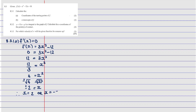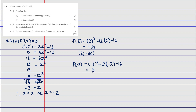These are only the x-coordinates of the turning points. We need to substitute into the original formula. f(2) = 2³ - 12(2) - 16 = -32, so the coordinate is (2, -32). Then f(-2) = (-2)³ - 12(-2) - 16 = 0, so that coordinate is (-2, 0).